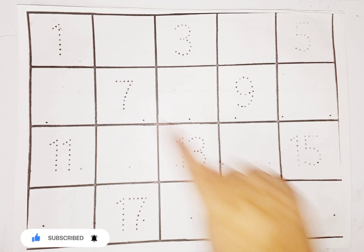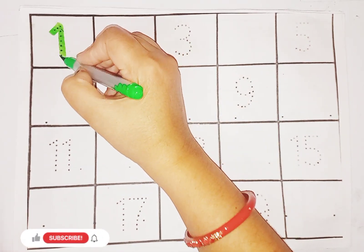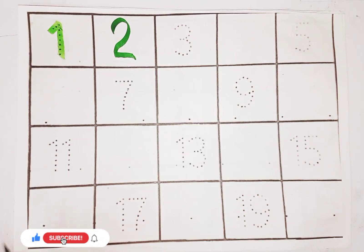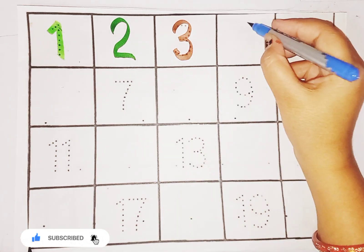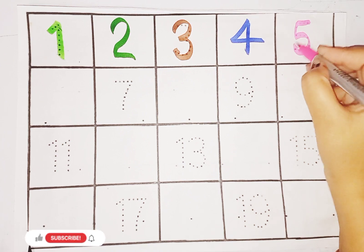Let's start the missing counting, 1 to 20. Perfect green color, 1. Next is number 2. This is number 3. Next is number 4. Here is number 5.